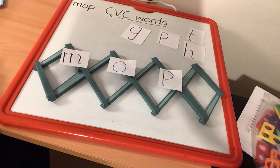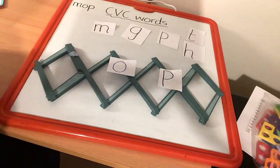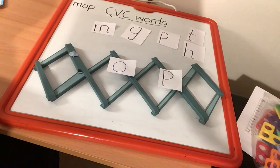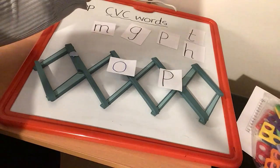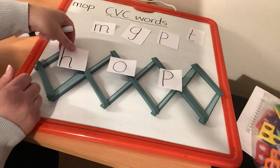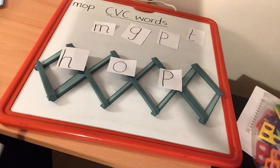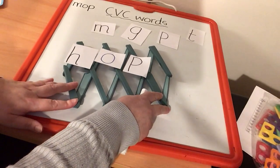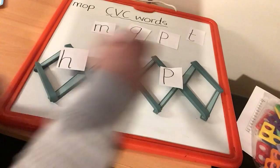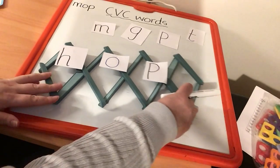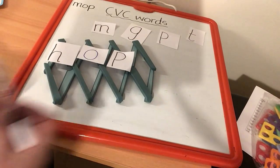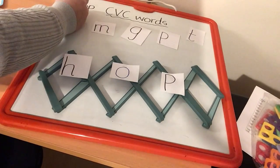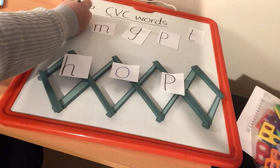Now, if I want to change MOP to HOP, what am I going to do? I've got to take away my M, and I've got to look for the letter that makes the H-H-H sound. There it is. Let's pop it in. And let's sound across our word: H-O-P. And blend it together — HOP. Sound it out, H-O-P, and blend it — HOP. Well done. Let's pop that one onto our list as well. HOP.